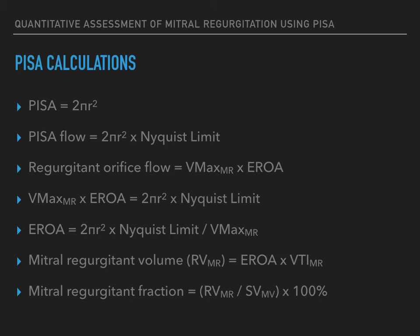Remembering that volume is a product of area and VTI, mitral regurgitant volume can be calculated. MR VTI can be calculated by tracing the MR jet. Multiplying MR VTI by the effective regurgitant orifice area gives the regurgitant volume. Mitral regurgitant fraction is expressed as mitral regurgitant volume divided by mitral stroke volume multiplied by 100%. Mitral stroke volume is calculated by tracing the mitral valve inflow VTI and multiplying that by the mitral valve area.